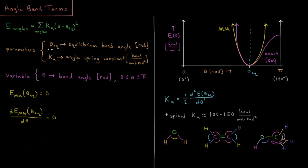We have once again two parameters. We have a spring constant, which can be determined by the second derivative of the exact potential energy surface near the minimum — essentially a spring constant parameter. A typical unit for this is kcal per mole per radian squared.